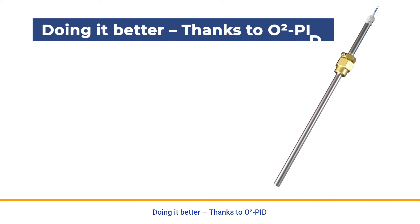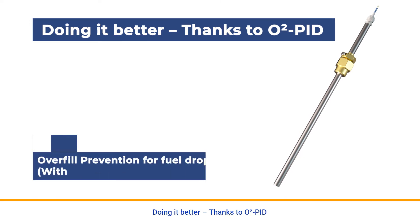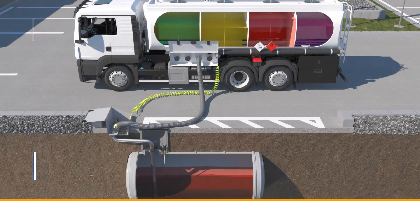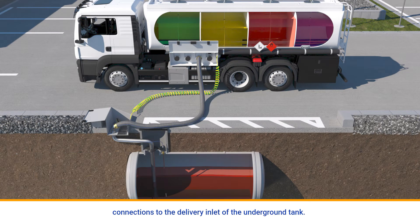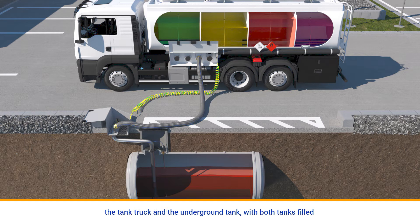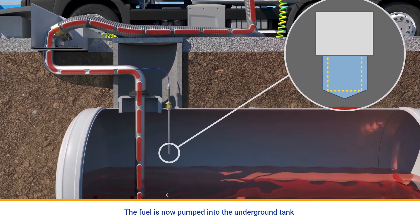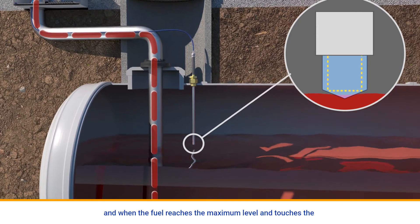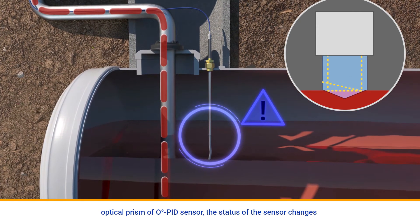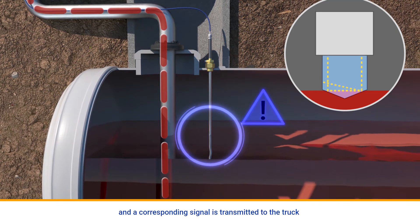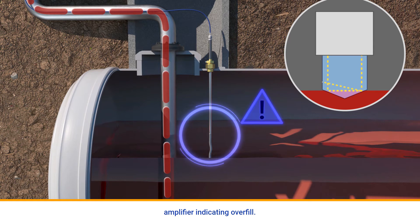Doing it better — thanks to O2PID. Scenario 3: Overfill prevention for fuel drop with O2PID. The O2PID is now installed on the tank with proper electrical connections to the delivery inlet of the underground tank. The electrically conductive hose is correctly connected between the tank truck and the underground tank, with both tanks filled with diesel. The fuel is now pumped into the underground tank, and when the fuel reaches the maximum level and touches the optical prism of the O2PID sensor, the status of the sensor changes and a corresponding signal is transmitted to the truck amplifier indicating overfill.